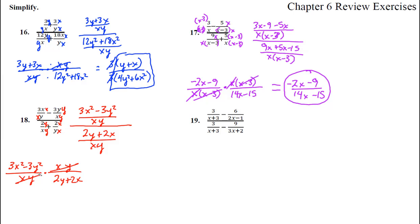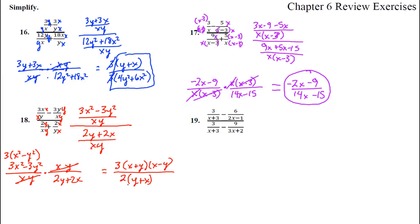The xy's cancel. We need to do some factoring. We can take a 3 out of the top, leaving x squared minus y squared — this is a difference of squares. So the top is 3 times (x plus y)(x minus y). The bottom: a 2 comes out, giving 2 times (y plus x). Y plus x and x plus y are the same thing — they cancel. Equals 3(x minus y) all over 2.